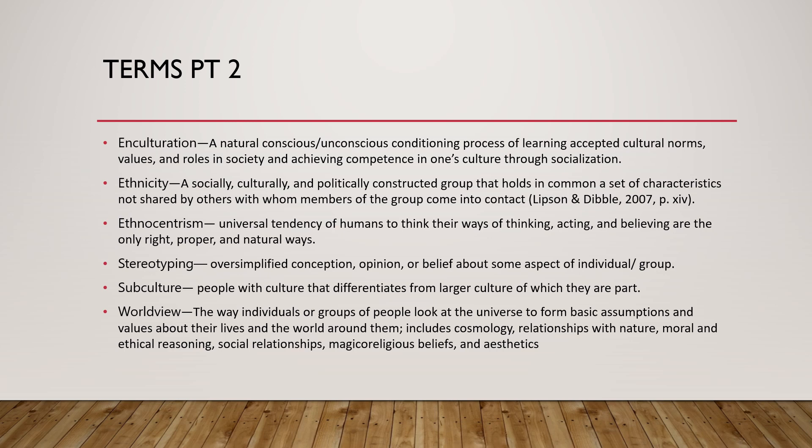There are times when you may hear about race or ethnicity as part of a risk factor, but this is a social construct — a group that's a social construct — and not necessarily having any genetic impact on disease processes whatsoever. Ethnocentrism is a universal tendency of humans to think their way of thinking and believing is the only right way. Stereotyping is an oversimplified opinion or belief about an aspect of a group. A subculture refers to people within a culture that differentiates from the larger culture — for example, nursing students are a subculture of nursing as a whole. A worldview is the way individuals or groups look at the universe to make basic assumptions and values about their lives.